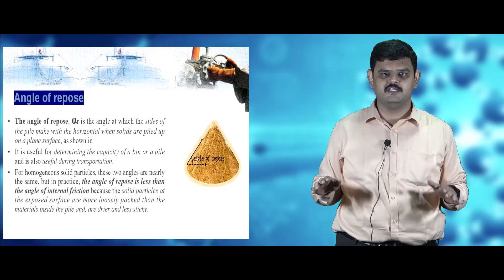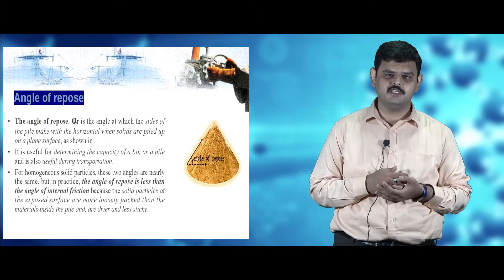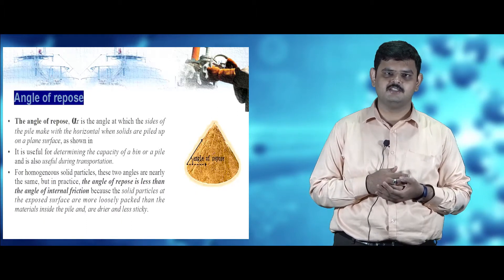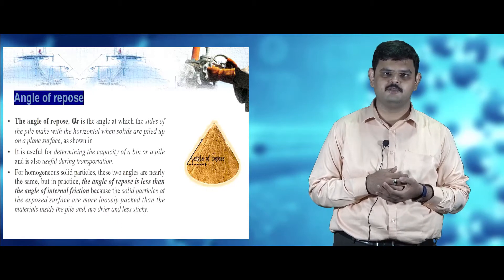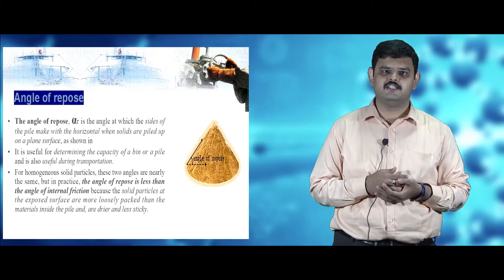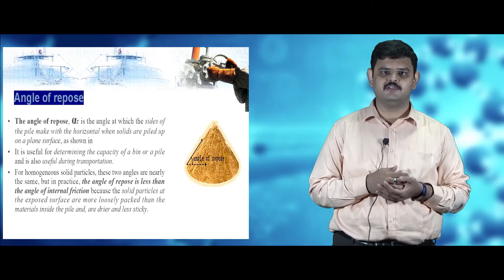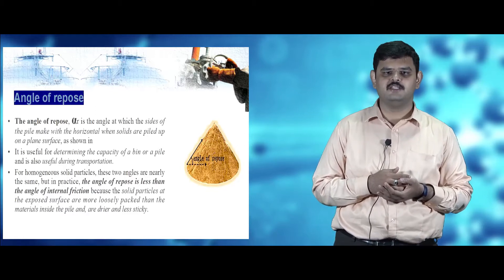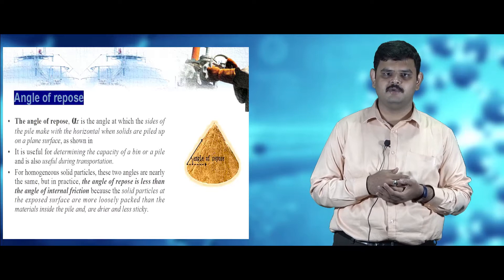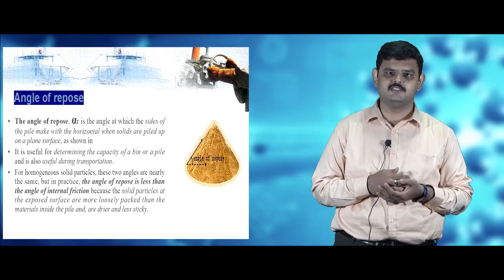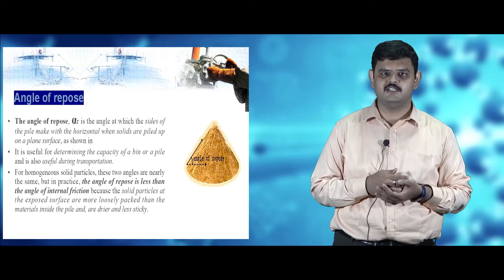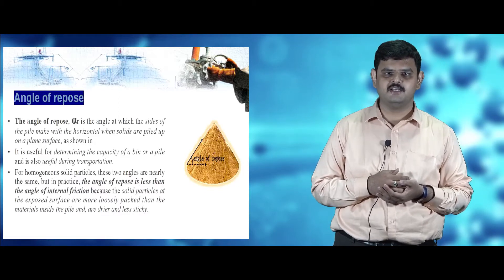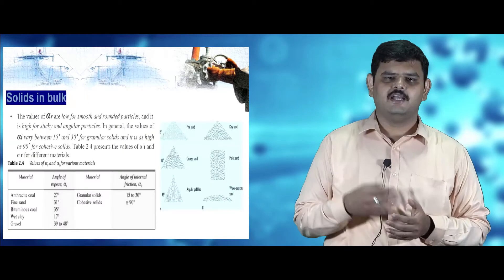When we pour solid materials on a horizontal surface, it forms a conical heap. The angle with which the conical heap forms with the horizontal surface is known as the angle of repose. It is useful for transportation and storage purposes. For homogeneous particles, the angle of repose and the angle of internal friction are the same, but in general practice the angle of repose is lesser compared to the angle of internal friction.